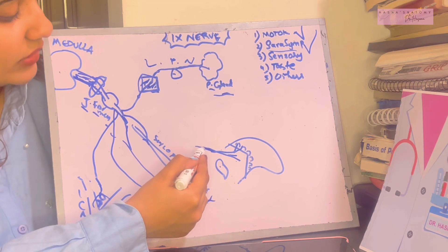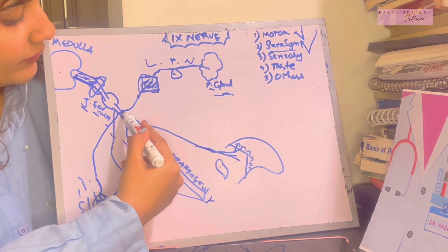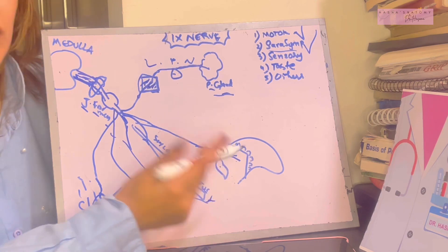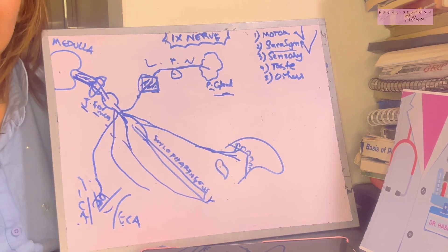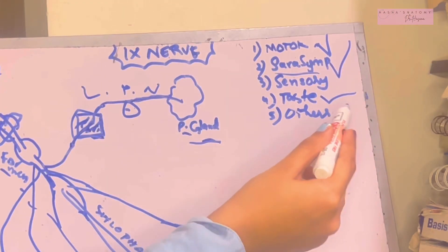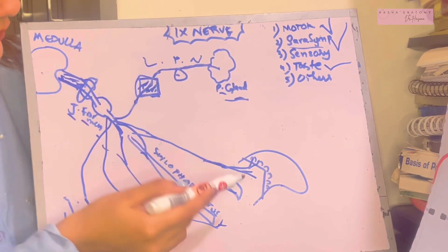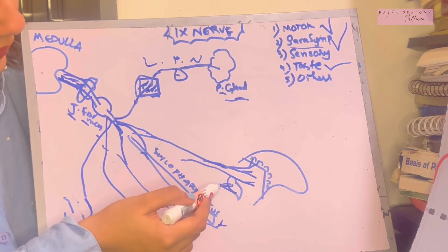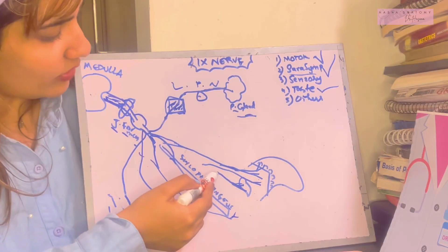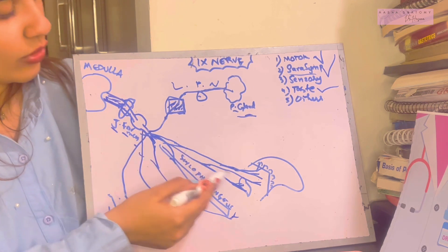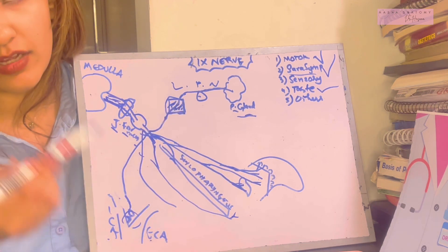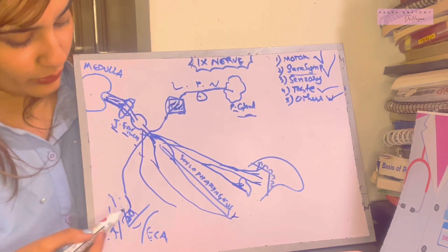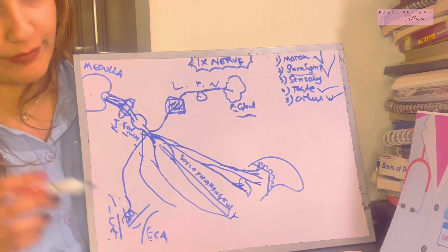The lingual branches carry both taste and sensory function from the posterior third of the tongue. The tonsillar branches carry sensory information from the tonsil. With the carotid sinus and body also addressed, all functional components of the glossopharyngeal nerve — motor, parasympathetic, taste, sensory, and carotid — have now been covered extracranially.